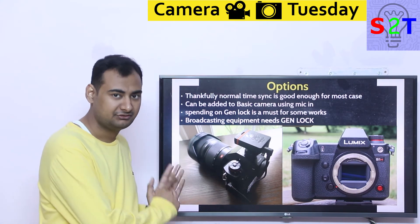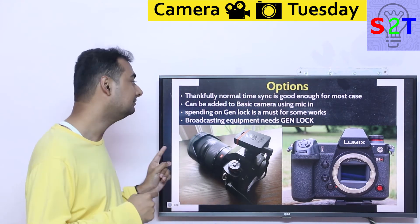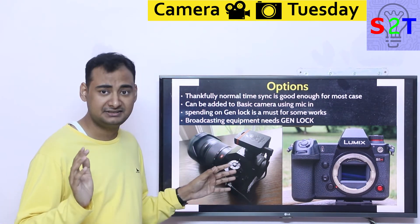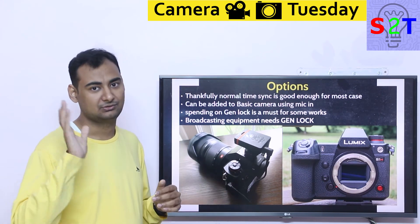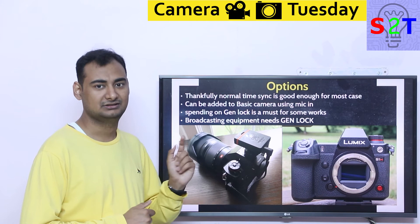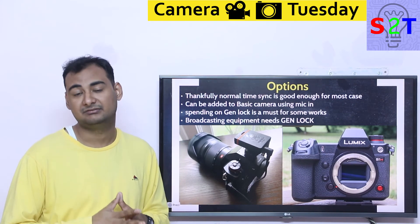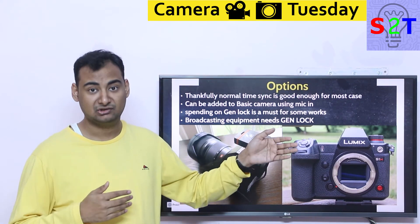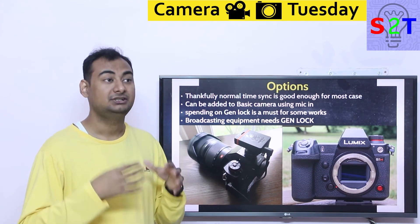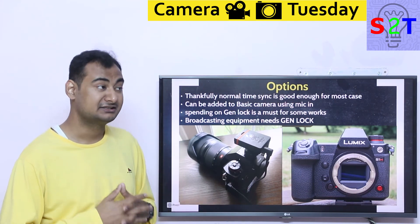Syncing is good enough for more than enough scenarios — you may never need genlock. However, if you're not using an SH1, you can use a microphone input for time code. Just double-check that your software can read it and never try to listen to that audio — it's very harsh and painful. Many people have done amazing multi-camera work utilizing Tentacle Sync. If you really want to go all out, you can invest in temperature and voltage-compensated oscillators — but those are so expensive they make your mirrorless camera look cheap.